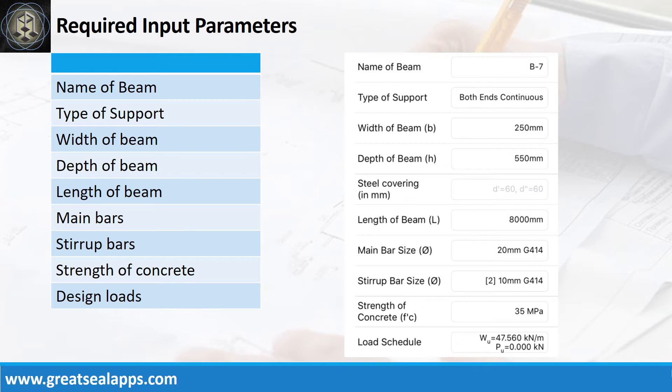Enumerate input parameters required. Name of beam: B7. Type of support: both ends continuous. Width of beam: 250 mm. Depth of beam: 550 mm. Length of beam: 8,000 mm. Main bars: 20 mm bar at grade 414. Stirrup bars: 10 mm bar at grade 414. Strength of concrete: 35 MPa. Factored uniform load: 47.56 kN per meter.